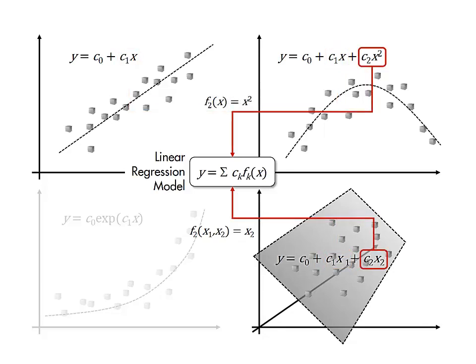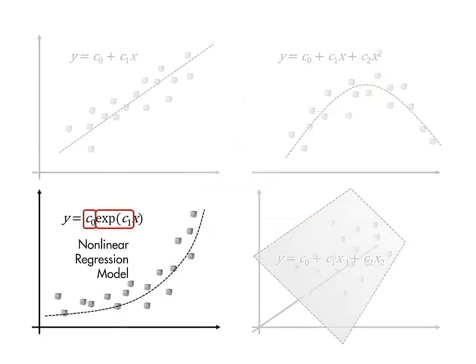Note that the functional dependence on the predictor variables can be linear or nonlinear. The key feature of a linear regression model is that the parameters of the model appear linearly. If the parameters appear in a nonlinear manner, then the regression model is nonlinear.